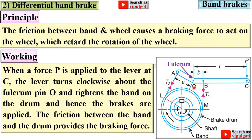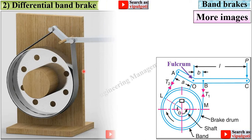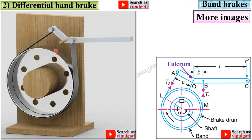The very important point here is about the dimensions of A and B. Here are more images for the differential band brake — this is actually a model of the differential band brake so that you can understand the construction. This is the band; the two ends of the band are attached to the lever at a certain distance from the fulcrum. This is the drum. It is very easy to remember the figure of the differential band brake in the examination with the help of this model.